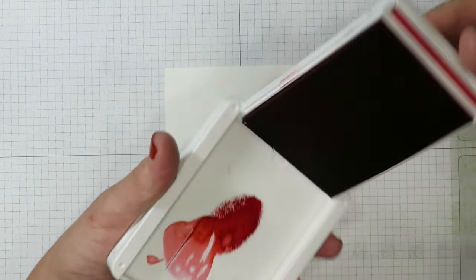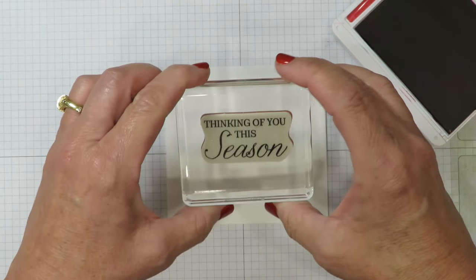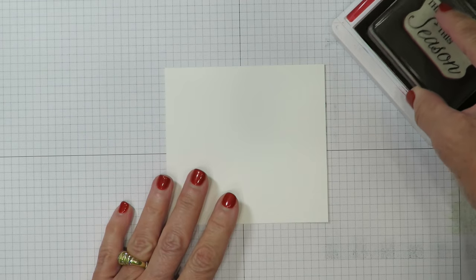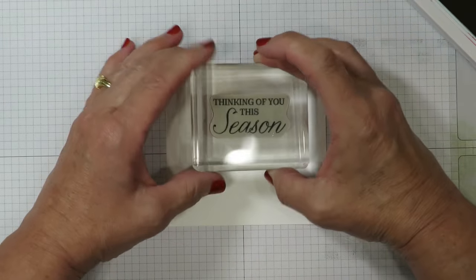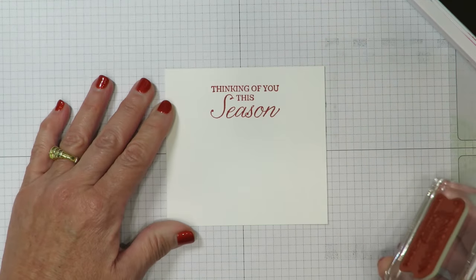This piece is going to be for the inside greeting. I'm going to use the real red ink for this one just to create some color coordination. And from that same stamp set, I've pulled out the greeting, thinking of you this season. So I'm going to go ahead and I'll ink that up. And I'm going to stamp that here near the top. It'll leave me a little bit of room to sign my card and maybe put a personal message.